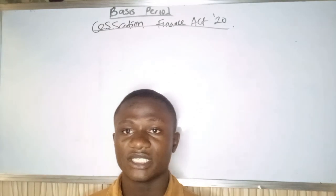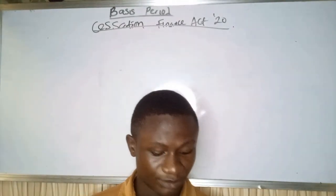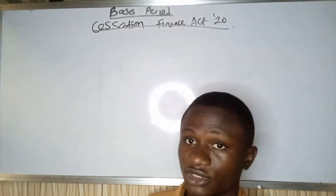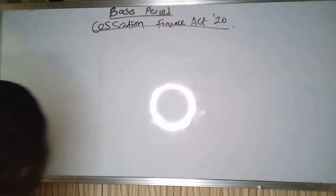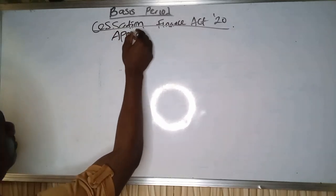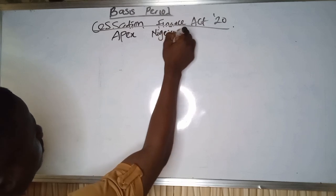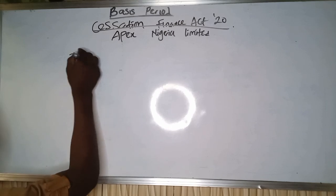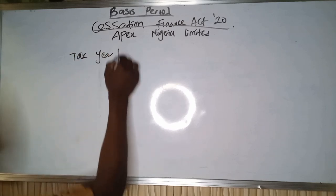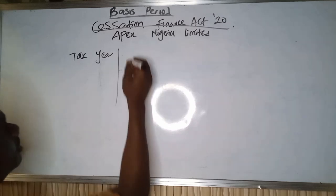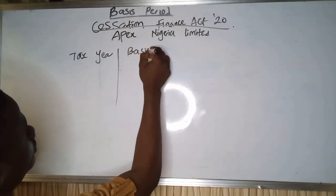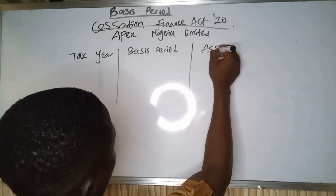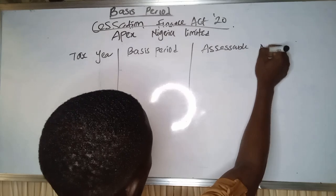Don't forget that in business period, we use the preceding year basis. The tax of 2020 will be collected in 2021, and so on. To solve this question, the name of the business is Apex Nigeria Limited. Our format includes: Tax Year, Basis Period, and Assessable Profits.